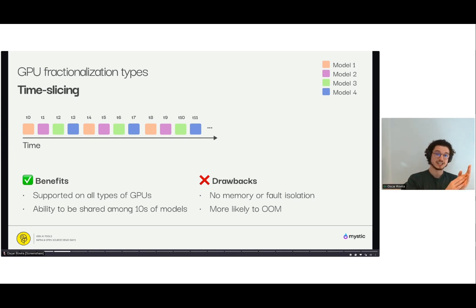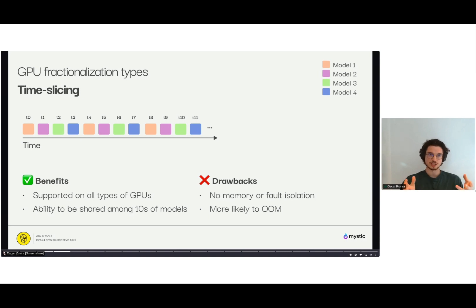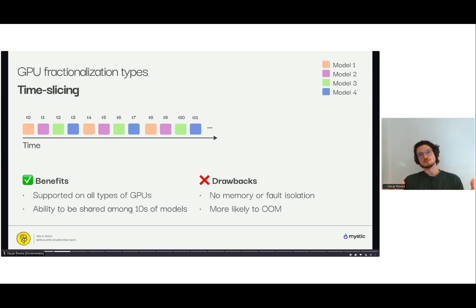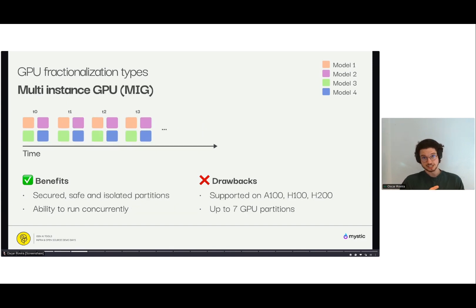The good thing about time slicing is that it's widely adopted and supported across all different types of GPUs. We've seen cases where one is able to run on T4s and A100s multiple models — especially non-LLM models, very small embedding models, or models like Whisper — where you have quite a lot of leftover memory on that GPU. Running many of those on the same GPU becomes very beneficial through time slicing.